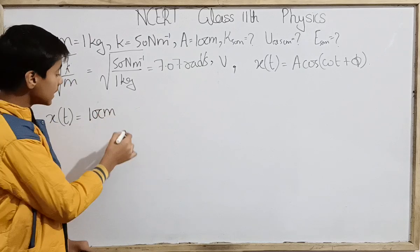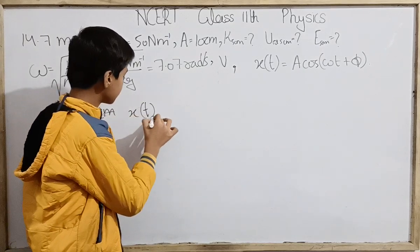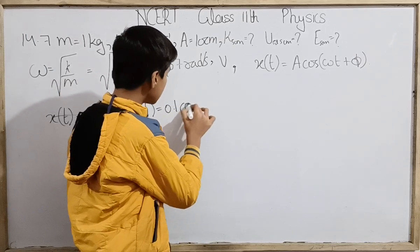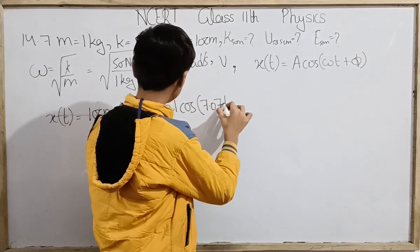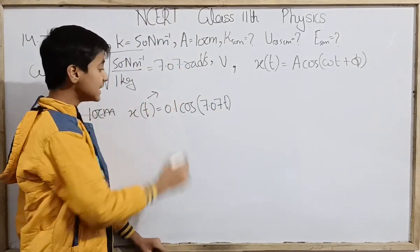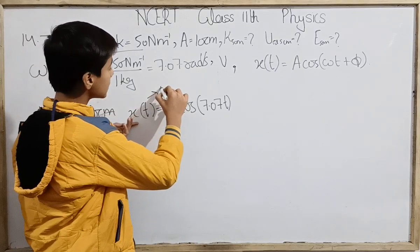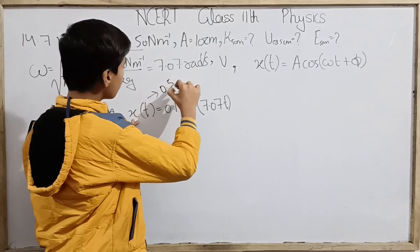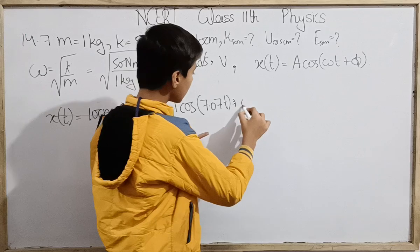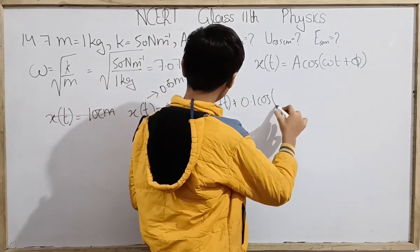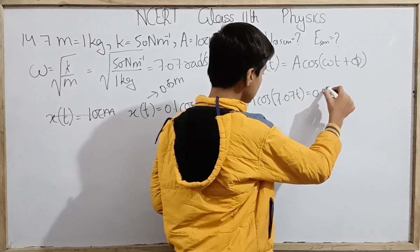This is 0.1 times cos of 7.07t. We need to find the value of t at which this equals 0.05 meter. So we can find from here: 0.05 equals 0.1 cos(7.07t).